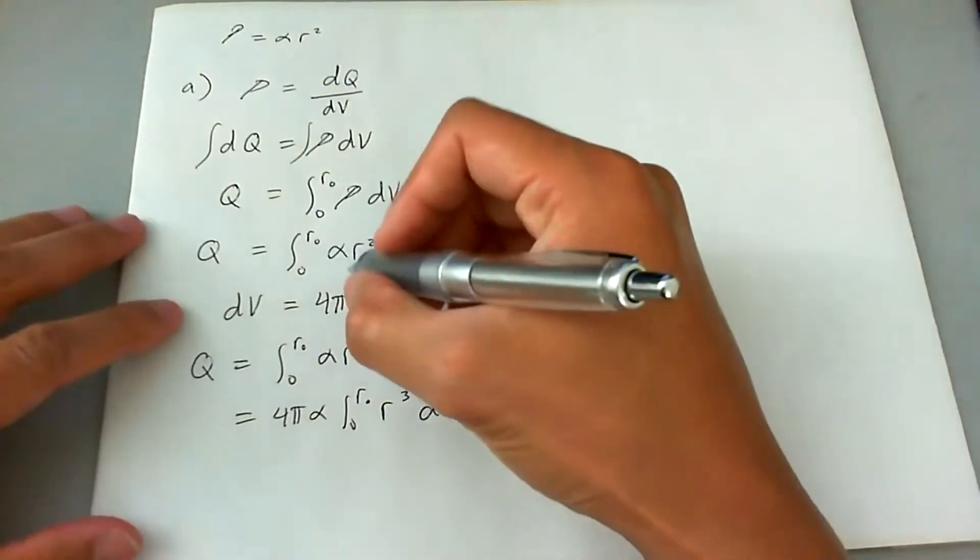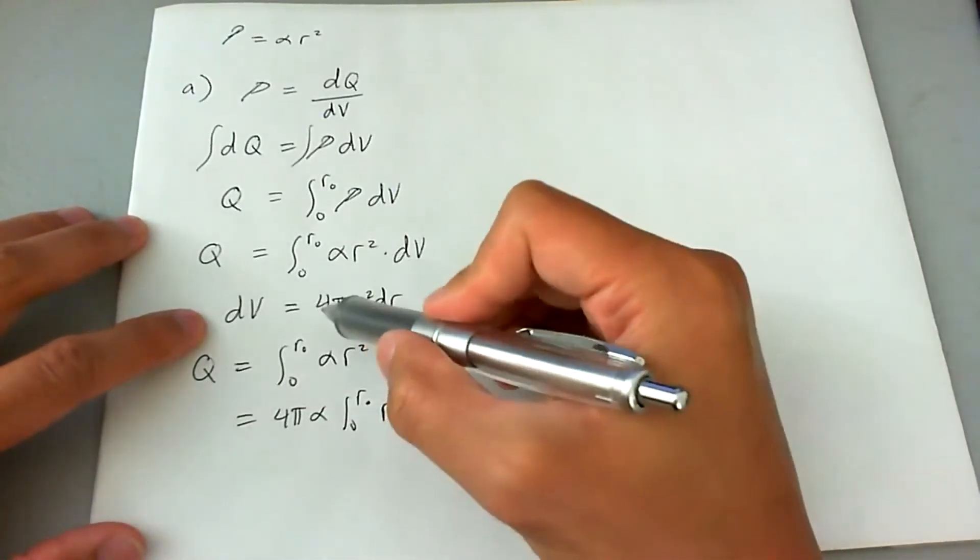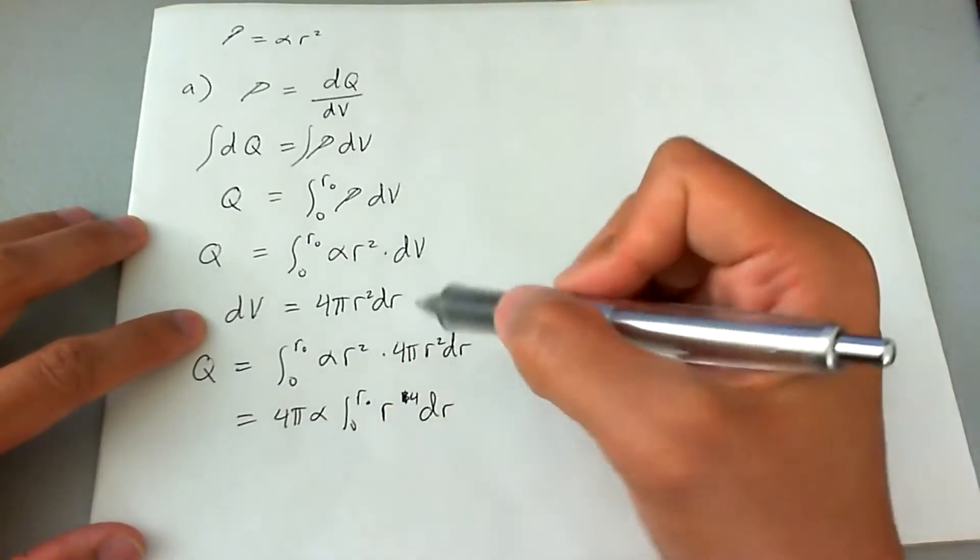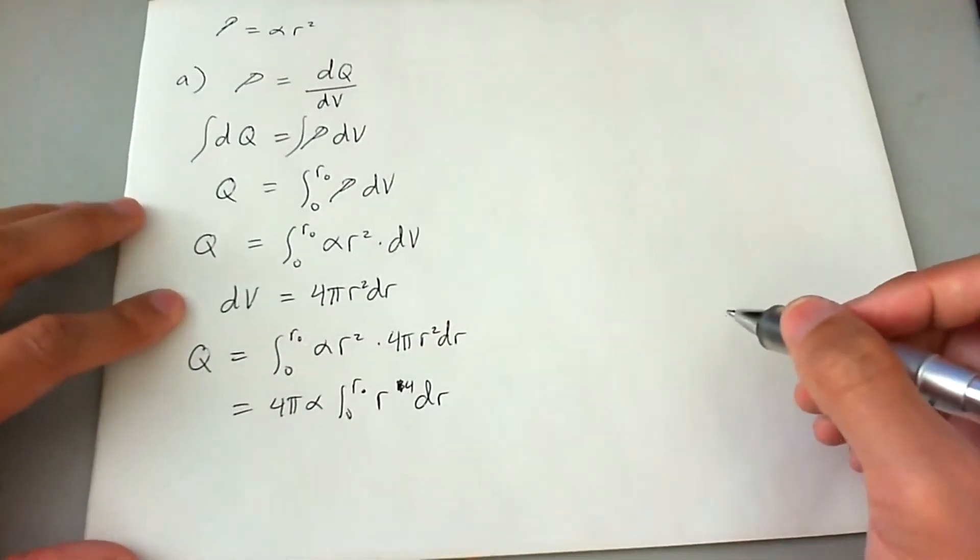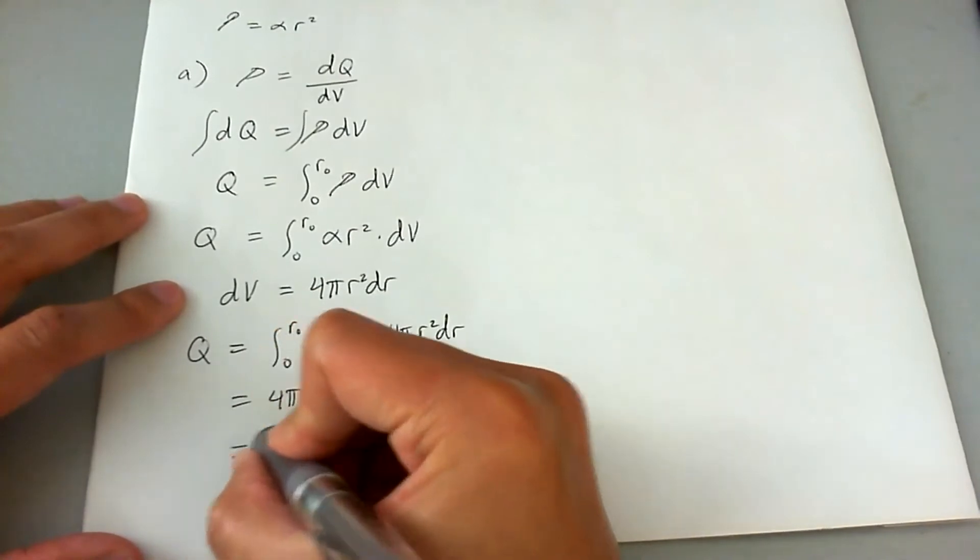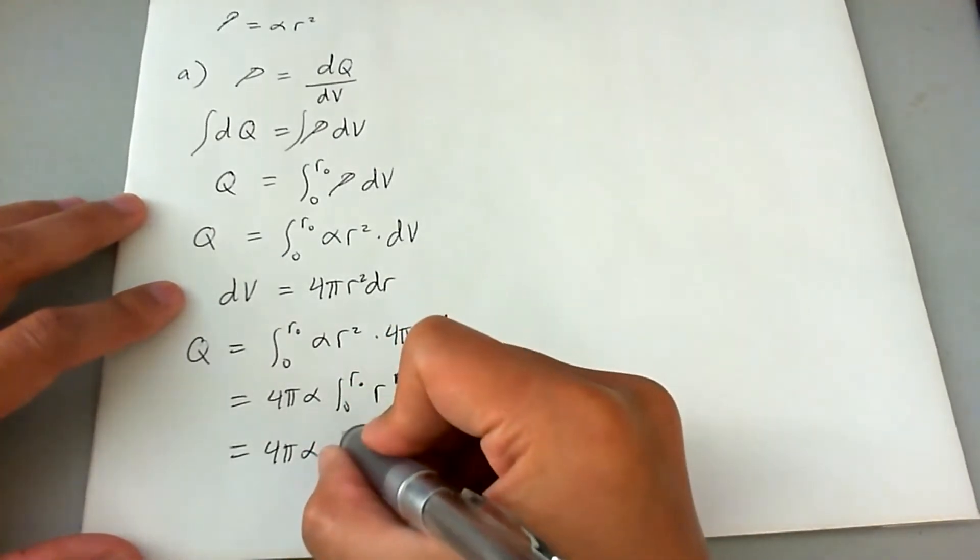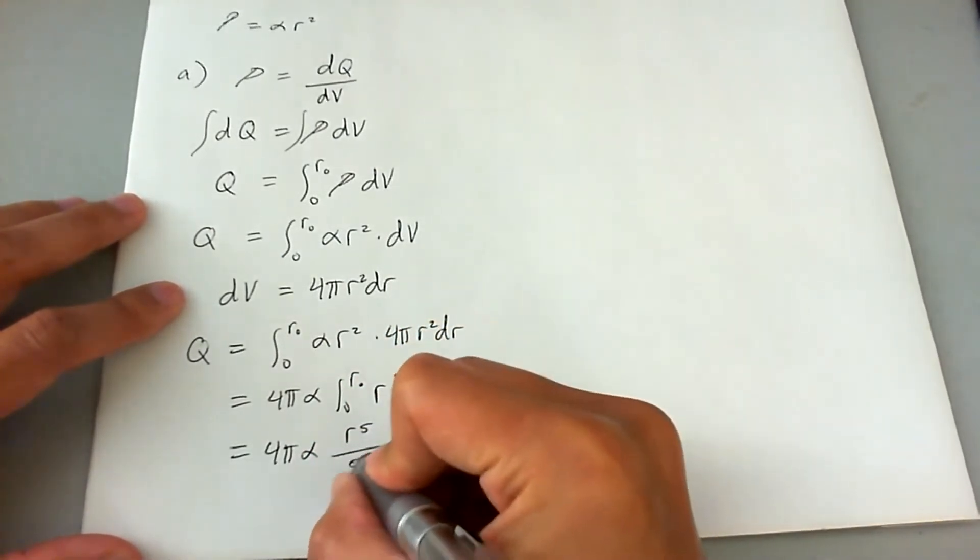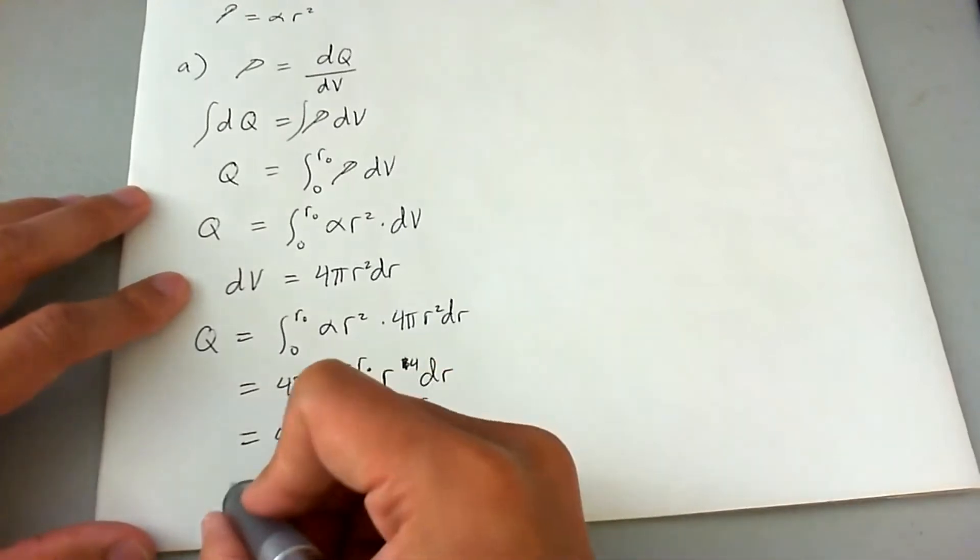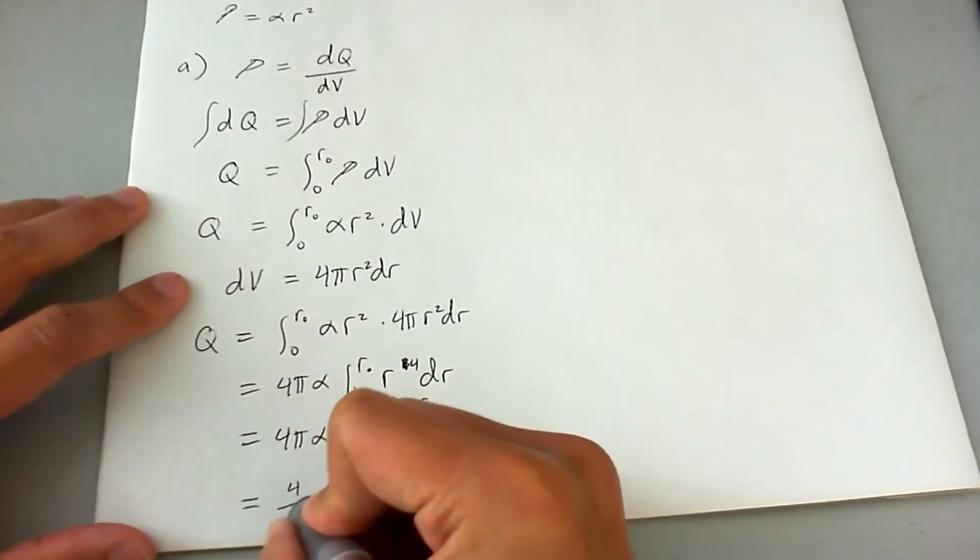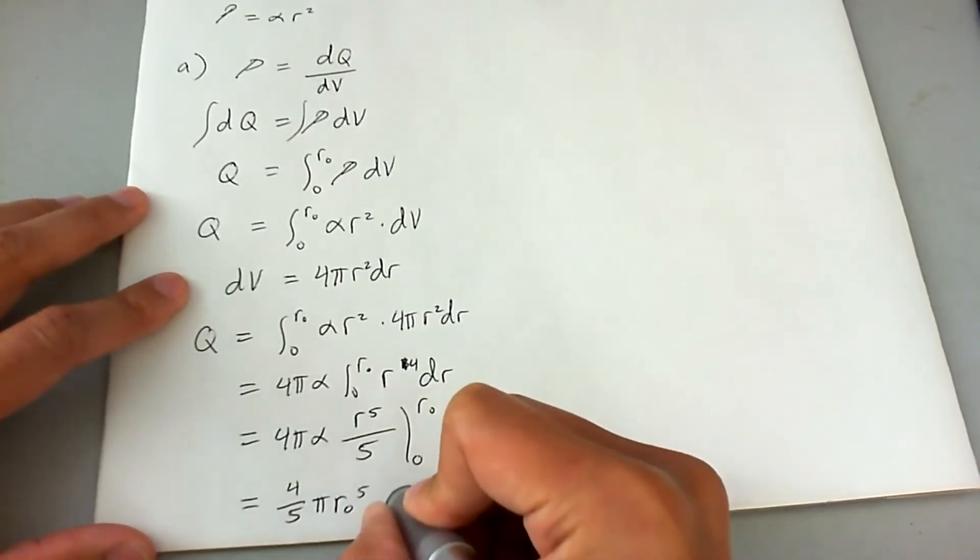And I apologize, I made a small mistake. It's actually going to be R squared here. So DV for a sphere is actually 4 pi R squared dr. So we're going to go ahead and propagate those changes down here. This becomes R to the fourth dr. So I apologize for that mistake there. So now Q is going to be 4 pi alpha. The integral of R to the fourth with respect to dr is going to be R to the fifth divided by five. Integral taken from zero to R naught.